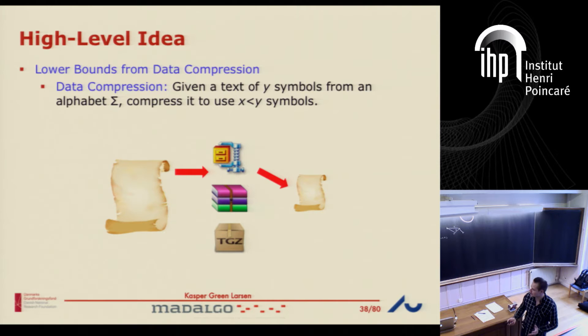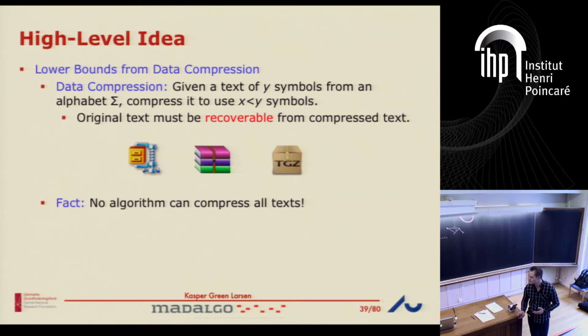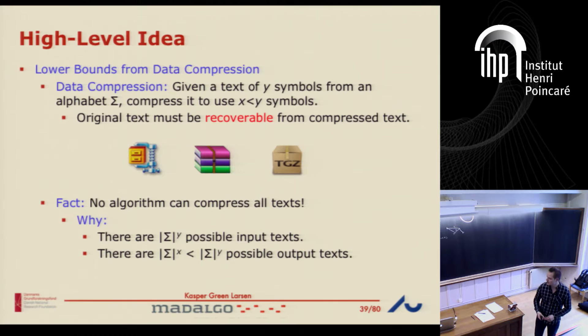Let's look at data compression. You're given a text and you want to compress it into a shorter text, and you want to get the original text back. A simple fact is that no algorithm can compress all texts. There's alphabet-size-to-the-y different texts of length y, and if you want to compress them all to a text of length x, there's not enough unique text to represent all of them.